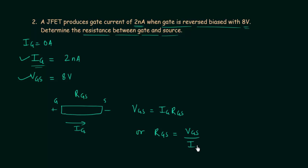VGS is equal to 8 volts and IG is equal to 2 nanoamps. When you solve this, you will have 4 times 10 raised to power 9 ohms, or we can write 4000 times 10 raised to power 6 ohms, or 4000 megaohms. So this is the answer to the second question.